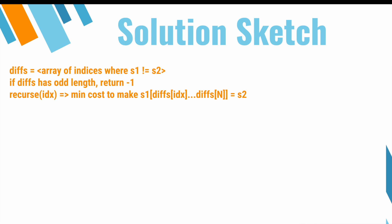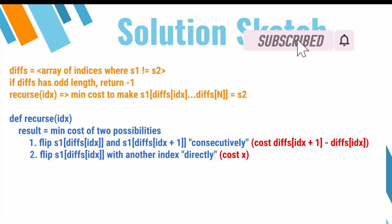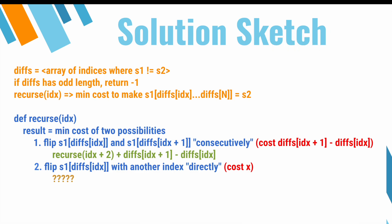We can then recurse through our differing indices. For each index, we have a choice: flip bits consecutively until the next differing index with cost j minus i, or flip it with any arbitrary future differing index with cost x. The first choice is not too difficult to convert into code. Our recurrence relation for the first case would look like: recurse(idx+2) + diffs[idx+1] - diffs[idx], because diffs[idx+1] - diffs[idx] represents the distance between the next two differing indices. And recurse(idx+2) represents the cost to flip the rest of s1 into s2, excluding the two indices that we just flipped.